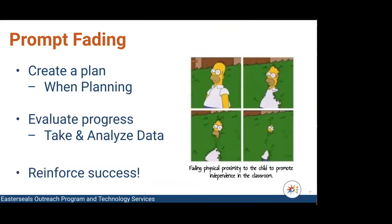When you plan for prompting, you should also plan for fading. You should come up with that plan at the onset. You always want to have that plan in place. We want to fade as soon as possible. So how are you going to know when it's time? You have to collect data. You have to evaluate that data. Are they moving forward quickly? Keep dropping those prompts to a lesser level.